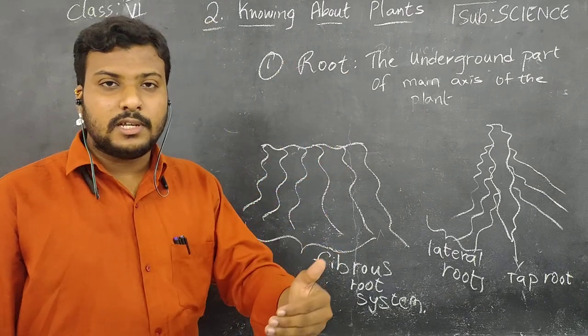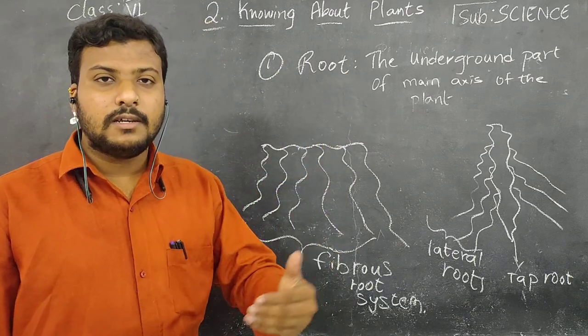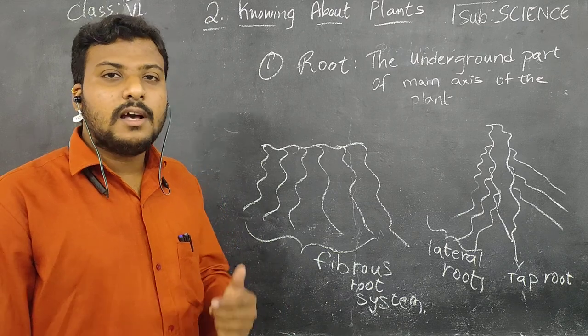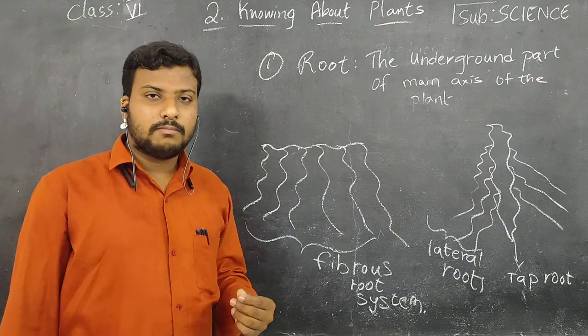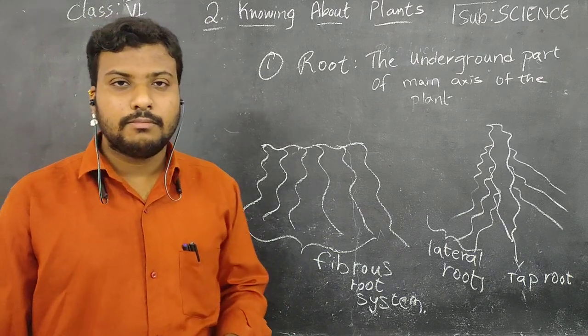So children, you know the definition of root — the underground part of the main axis of a plant. You should also know the functions: it provides water, nutrients, and minerals which are in the soil continuously to the plant parts. This is the main function of the root. In our next class we are going to discuss the second part of the plant, that is the stem. Thank you, children.